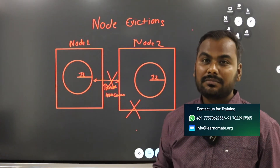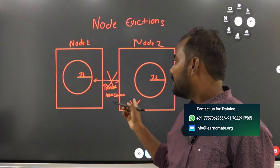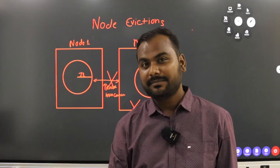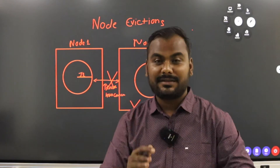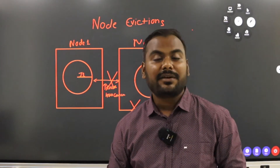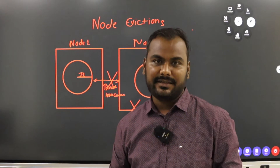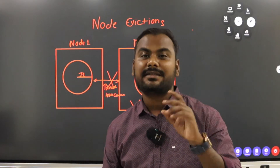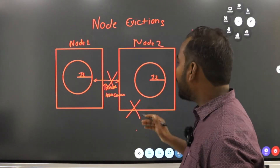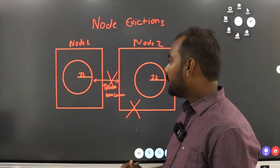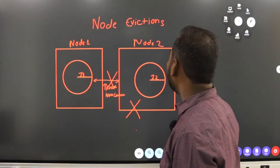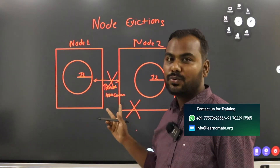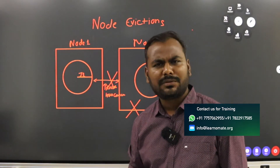So what will happen? The node which is not able to communicate with the other node will be evicted — it will no longer be part of your Oracle RAC clusterware. Why? Because if they are not able to share information with each other while still being part of the clusterware, there is a chance of inconsistency. To avoid this problem, the node will be evicted, so a two-node cluster becomes a one-node cluster.